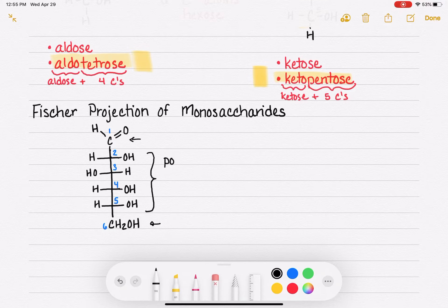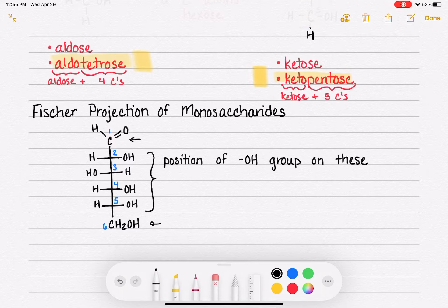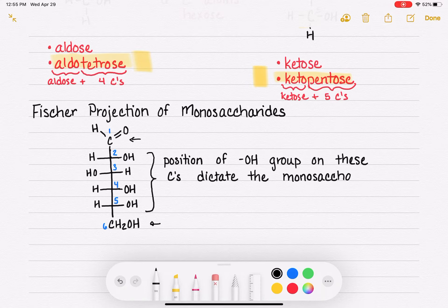The position of the OH group on these carbons dictates exactly which monosaccharide we're talking about. Not generic classification like aldose or aldotetrose or aldohexose in this case, but the exact monosaccharide. Is it glucose? Is it fructose? Is it sucrose? What is it?